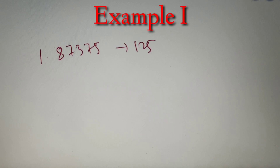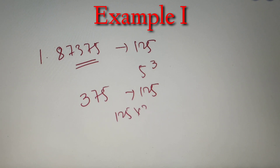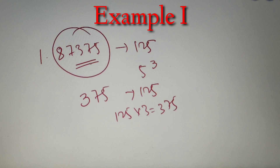For our first example, we have to check whether the number 87375 is divisible by 125 or not. Now 125 is equal to 5 raised to power 3, so we have to check the last three digits of the number. We check whether 375 is divisible by 125. We can clearly see that 375 equals 125 into 3, so the number 87375 is divisible by 125.